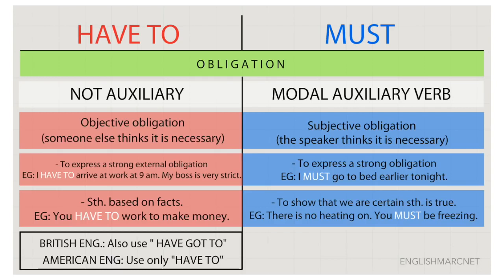Moving to the next red column under 'have to' — to express a strong external obligation. The example I gave you is: 'I have to arrive at work at 9am — my boss is very strict.' He's always watching the clock, and I have to arrive at work at 9am. Otherwise, he would say goodbye — 'Go home, you don't work here anymore.' It's something like a law; somebody else tells you to do it.